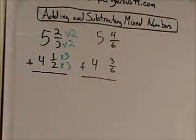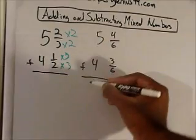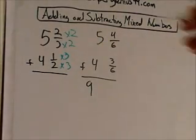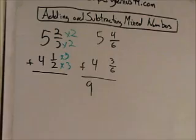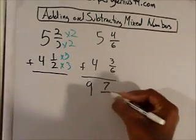All right. So now we're adding five and four-sixths plus four and three-sixths. So five plus four is what? Nine. Four-sixths plus three-sixths, what's that? Seven-sixths. Okay.